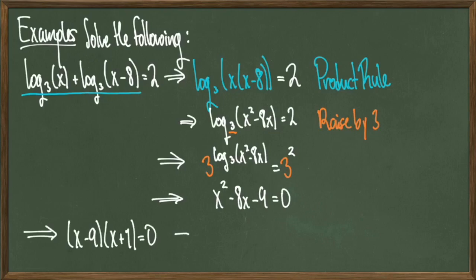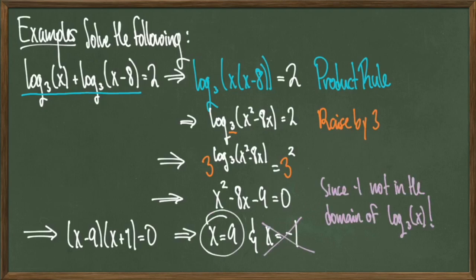As you factor and solve, you get a solution set of x = 9 and x = -1. However, we're not done yet because recall that logarithmic functions cannot intake negative numbers. Since x = -1 is a possible solution, we have to realize that the domain of our log functions don't allow negative numbers. So we actually rule this solution out and we're left simply with x = 9.